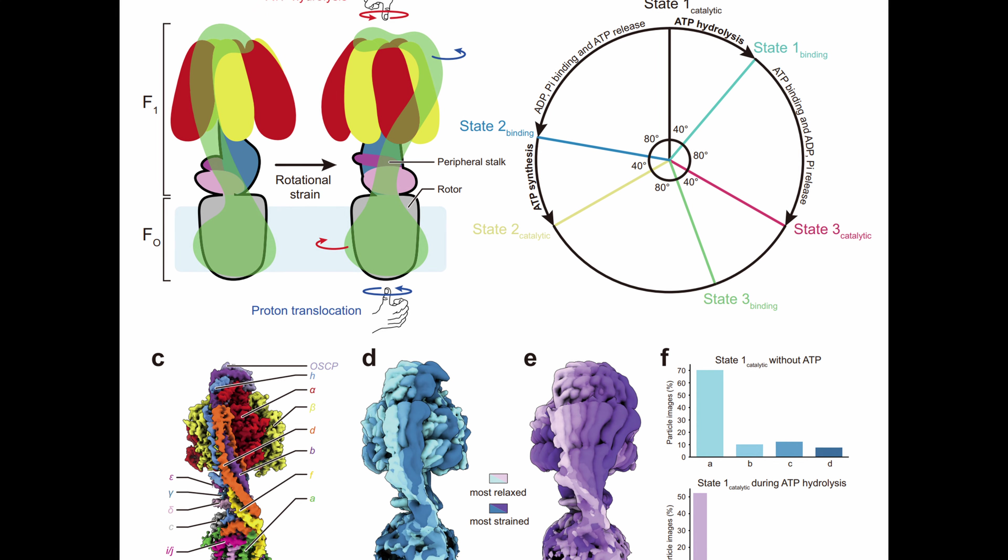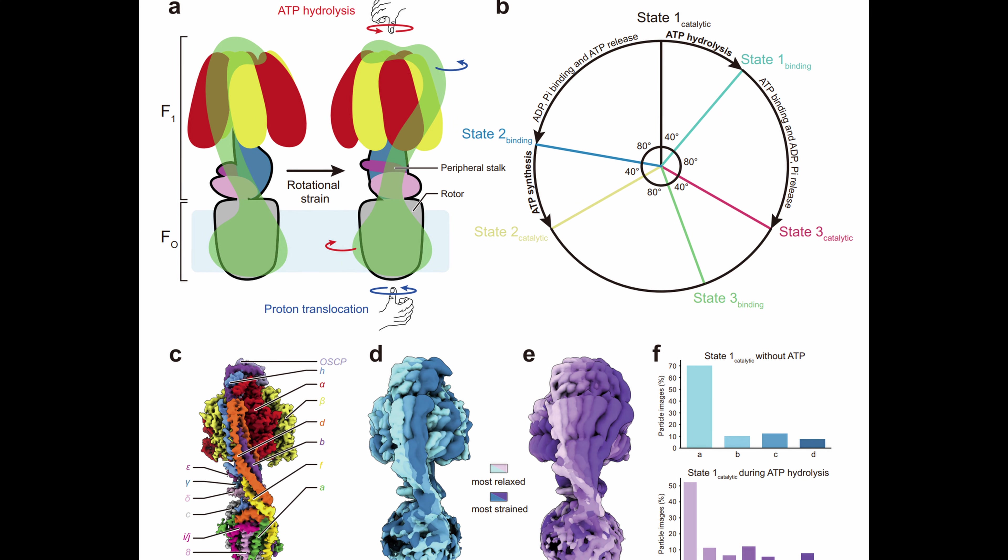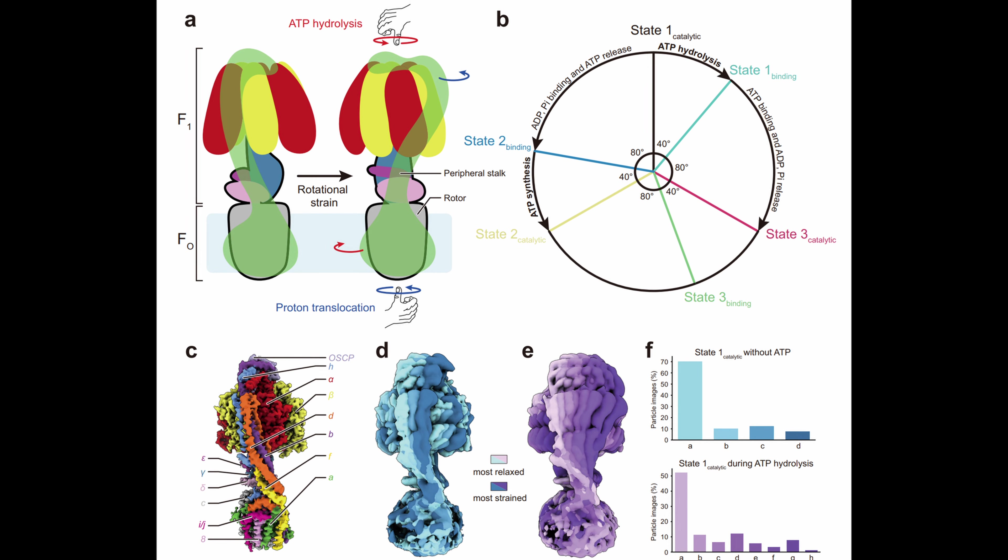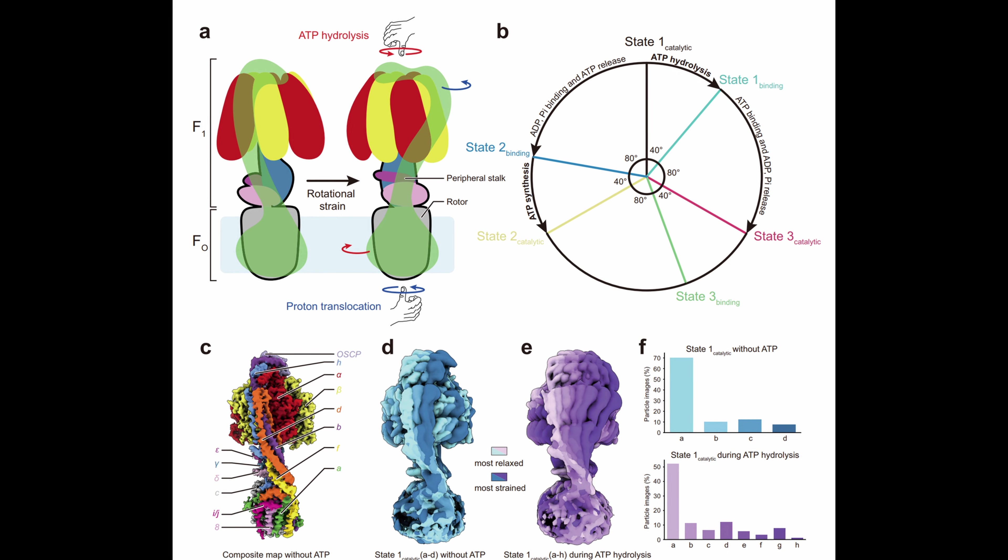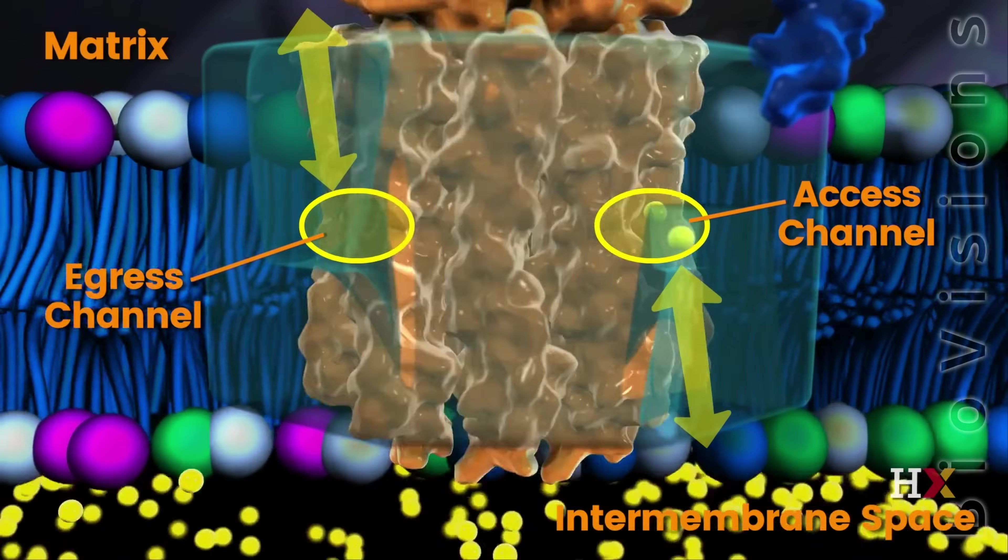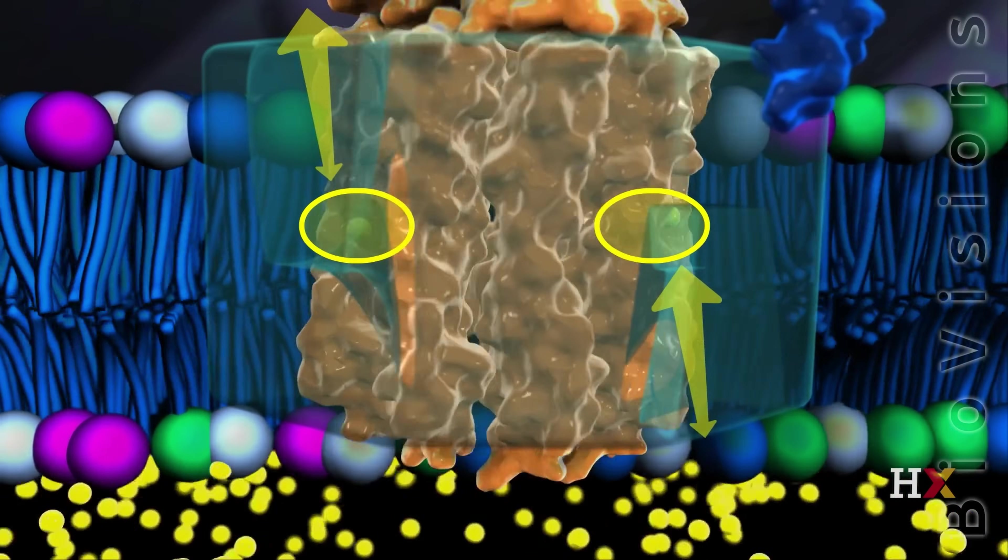Each 120-degree movement occurs in two steps of 80 degrees and 40 degrees. In this step, the gamma subunit rotates 80 degrees. An 80-degree turn produces the greatest torque, or power.